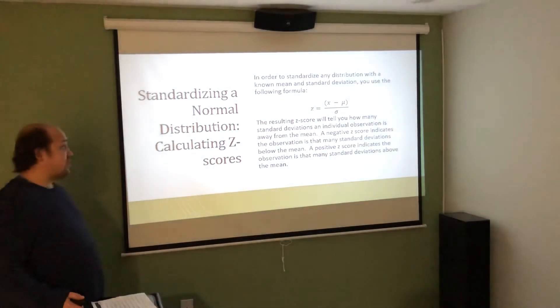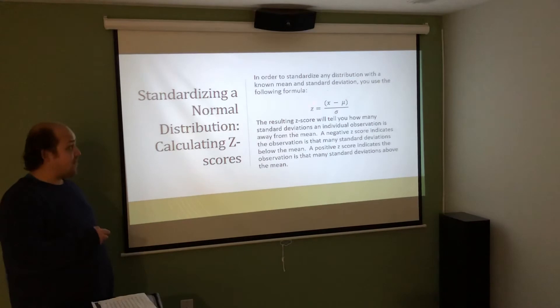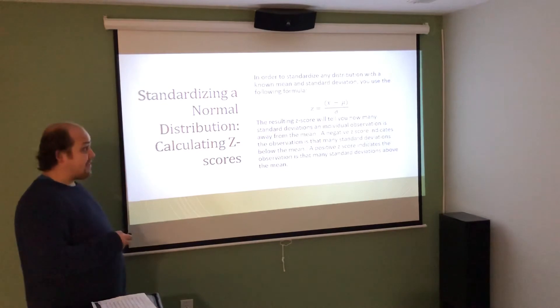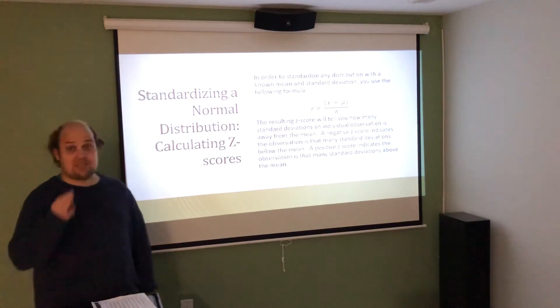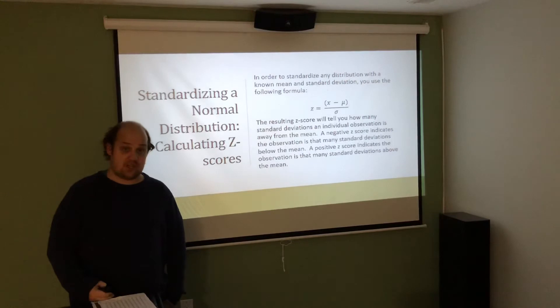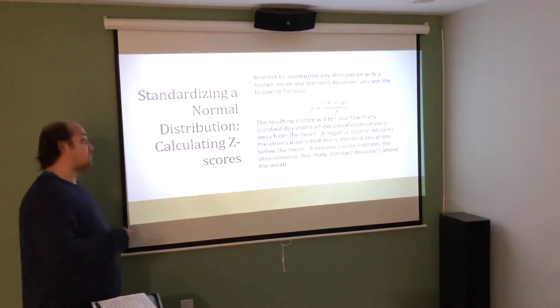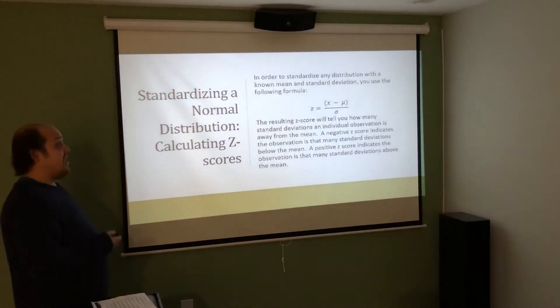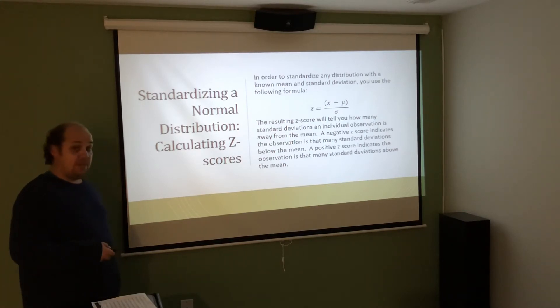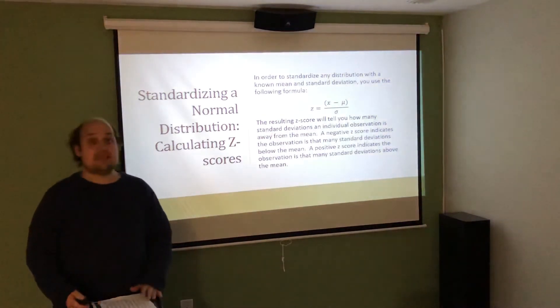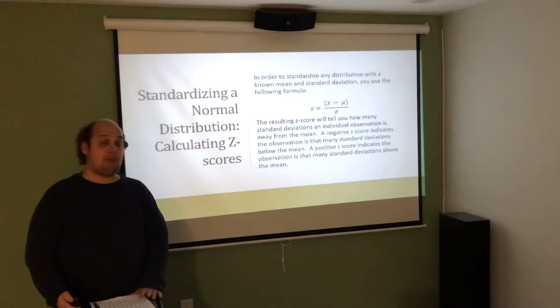Standardizing a normal distribution requires us to calculate a Z score by finding that Z score as the X value we're hoping to interpret minus the mean of the distribution divided by the standard deviation of the distribution. I always write the parentheses on top to remind students, do the subtraction before you do the division. If you try and do it all at once without parentheses, you will get wrong answers. From this Z score formula, a negative Z score indicates the observation is that many standard deviations below the mean. A positive Z score tells us that the observation is that many standard deviations above the mean.